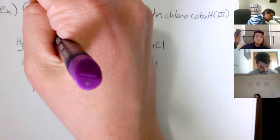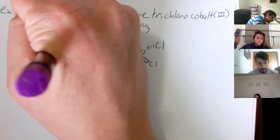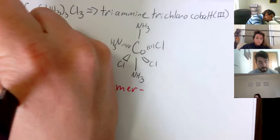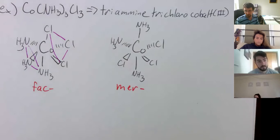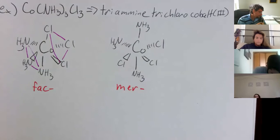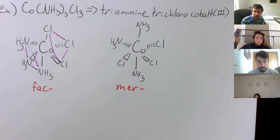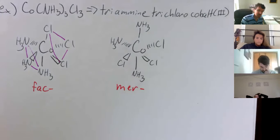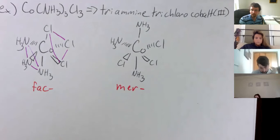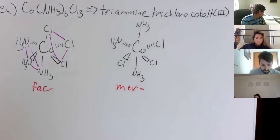Let me draw the triangular faces in purple. There's one triangular face and there's the other triangular face — that's the fac isomer. Whereas with this cobalt, the ligands are cutting the molecule in half — that's the mer isomer. In my experience, it's easier to check if it's a fac isomer first; if it's not, it's the mer.